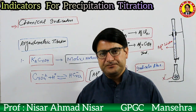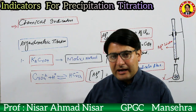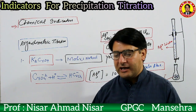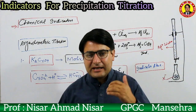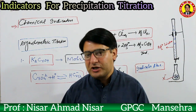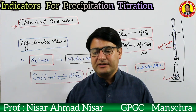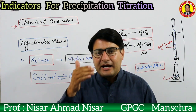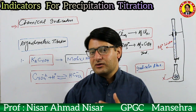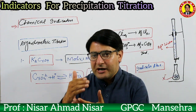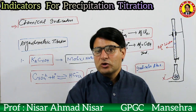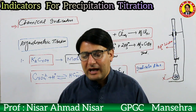First we will talk about chemical indicators. Chemical indicators are those chemicals that form a colored compound by reacting with the titrant, or change their color upon reacting with the titrant at the equivalence point. They are called chemical indicators because the color change occurs as a result of a chemical reaction — when the indicator reacts chemically with the titrant, its color changes.